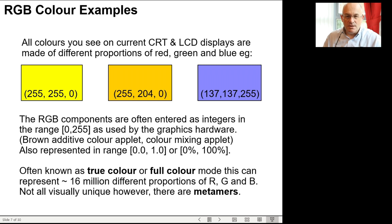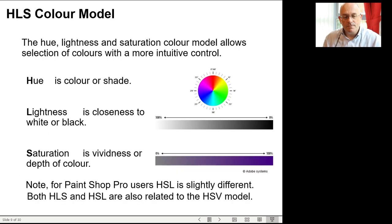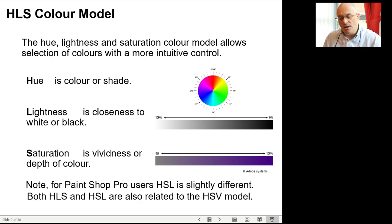Within this 16 million color space, they're not all truly perceived as distinct colors — there are a lot of metamers, where different values of red, green, and blue give the same perceived color. RGB color has disadvantages: it describes color at the device level, not in a way useful for artists or designers. HLS and HSL are alternatives. The hue, lightness, and saturation model allows more intuitive control — you choose hue around a circle, lightness as distance from black or white, and saturation as vividness, ranging from fully unsaturated gray to fully saturated 100% color.